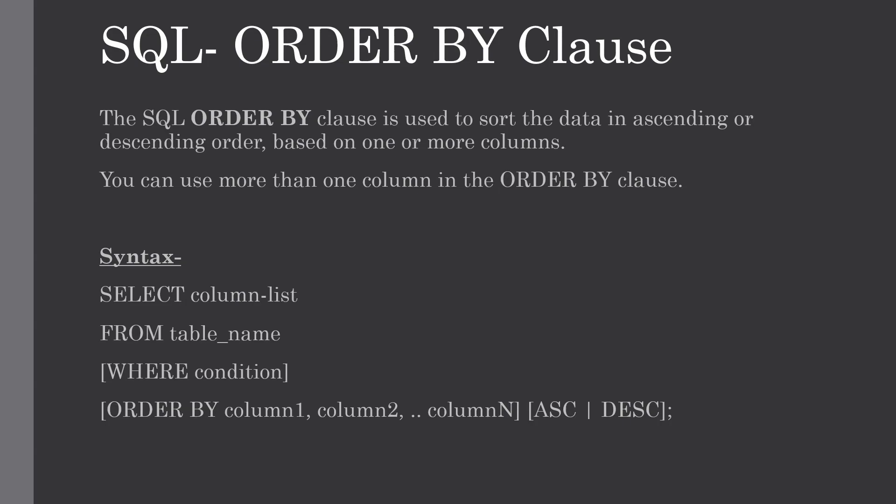Hello everyone, welcome to my channel. In this tutorial I'm going to explain how to sort data in a relational database system by using the ORDER BY clause. The SQL ORDER BY clause is used to sort data in ascending or descending order based on one or more columns. Some databases sort query results in ascending order by default.